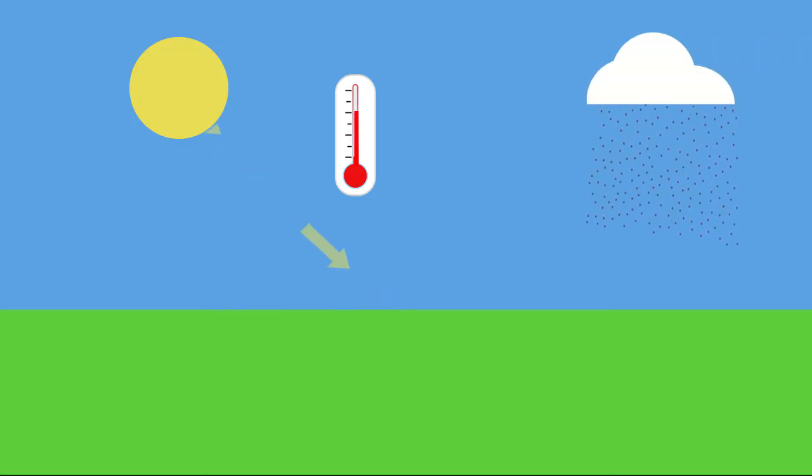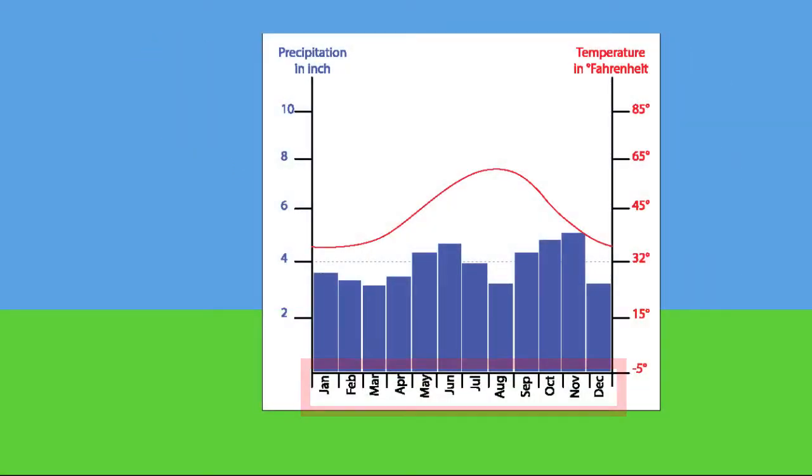The climate of an area consists of the average temperature and precipitation of the last 30 years. One way to describe the climate is by a climate graph. A climate graph is separated into 12 short periods. These are the months.